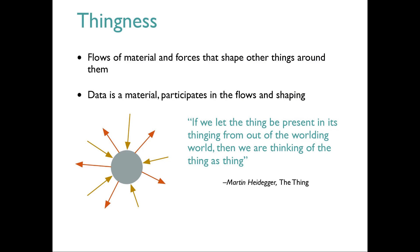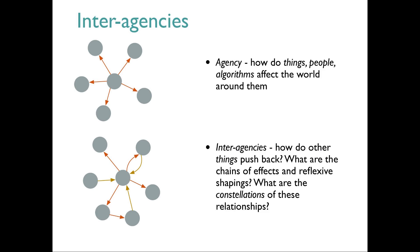I'm very interested in 'thingness' — the idea that the stuff around us is not just inanimate matter: it shapes the things around it and shapes the ways we behave. Even quite inert stuff has a lot of power in the world. This leads into the sense of interagency: as we make things, creating stuff changes the way we are, and the things we make change us just as we change them — so we get these interagencies and constellations of cause and effect between people, things, and algorithms.